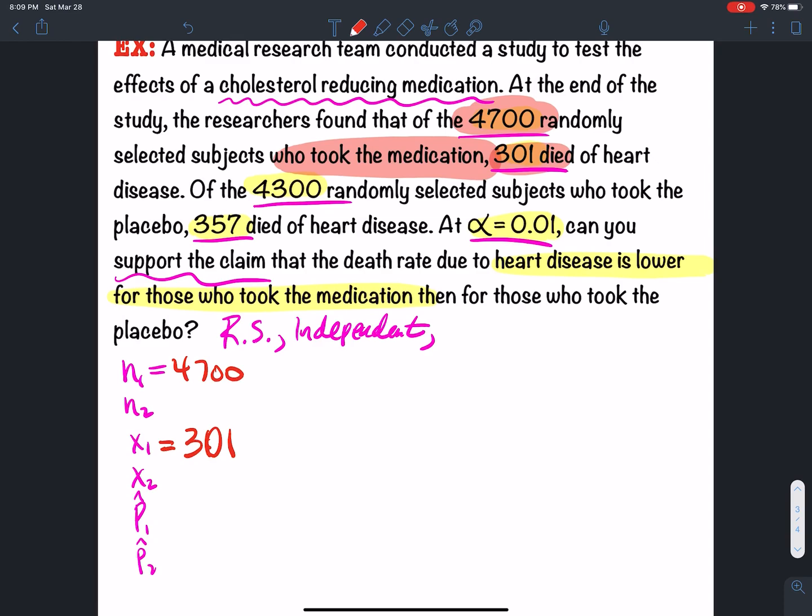Now, to get P hat 1, we take x1 over n1, the proportion of successes. So that's 301 over 4,700. If I type this in my calculator, I'm going to get the four decimals, 0.0640.